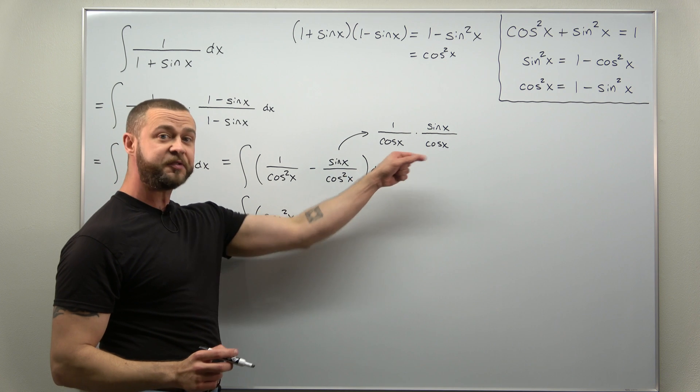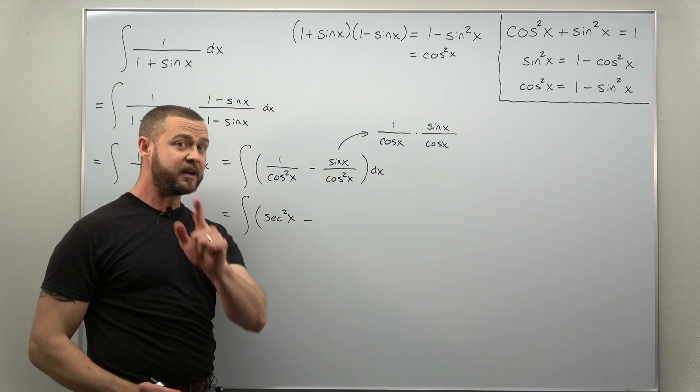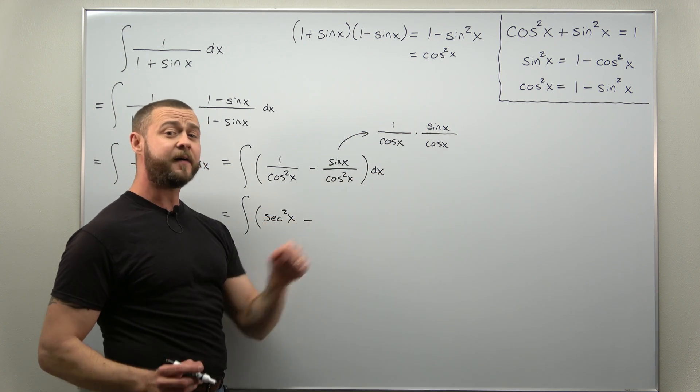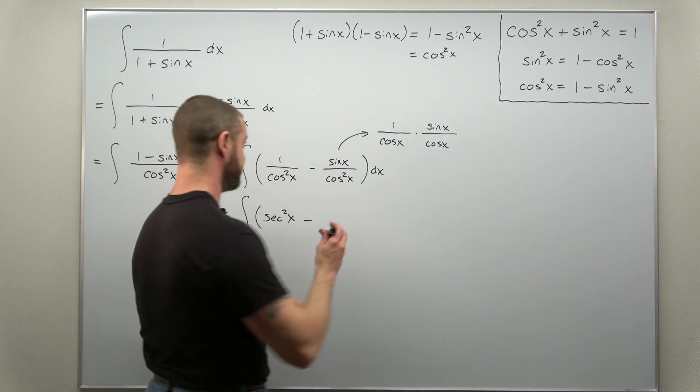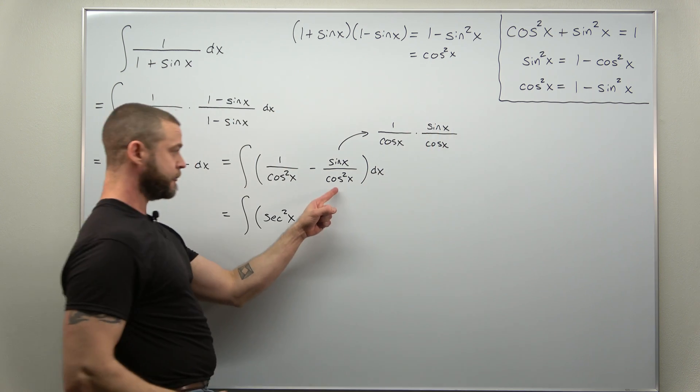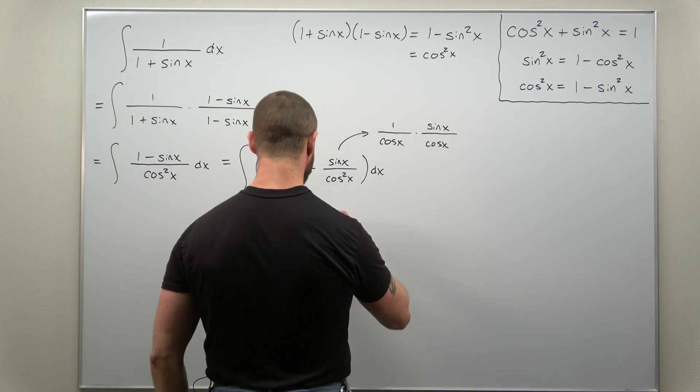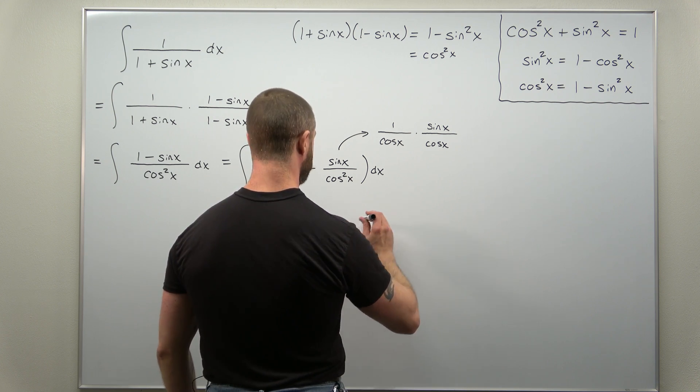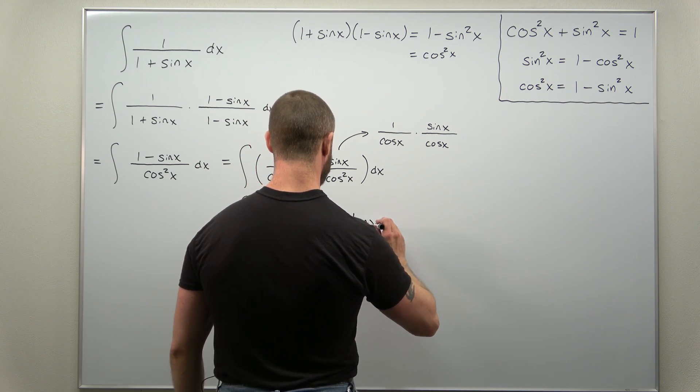And now we can rewrite each of those factors. One over cosine is secant. Sine divided by cosine, that's tangent. So we can rewrite this fraction as secant x times tangent x.